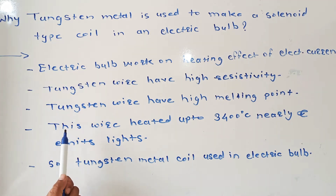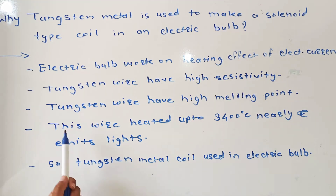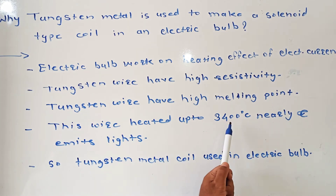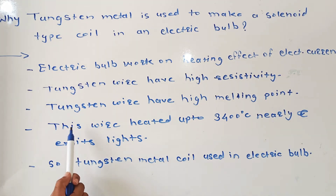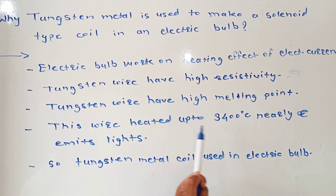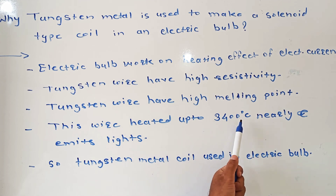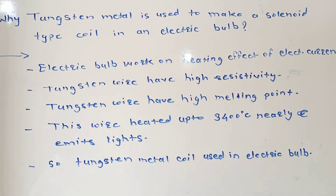The fourth point is: This wire is heated up to 3400 degrees Celsius nearly and emits light. Due to these four reasons, this tungsten metal wire is used in an electric bulb.